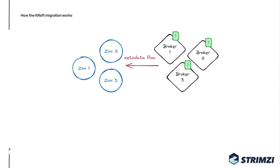The green box on the brokers with a number inside represents a generation of the brokers. During the migration you have to update the broker configuration and roll the brokers one by one, so that number will be incremented every time you roll a broker to mark a new incarnation compared to the previous one.